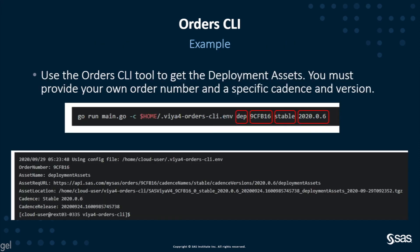Once you have done that, you can run the Orders CLI command and the tool will download the deployment assets you want for a specific order, a specific cadence — either stable or LTS — and a specific version. You have an example on the screen. In this case we are using the Go method.